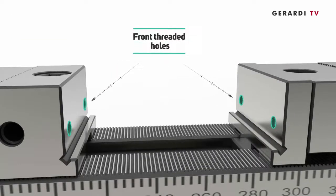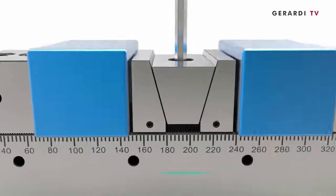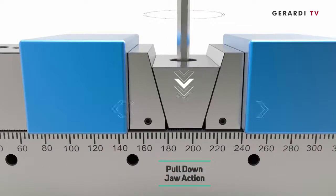Sixth, front threading holes and guided pull-down jaw action thanks to the ground combed teeth jaws.